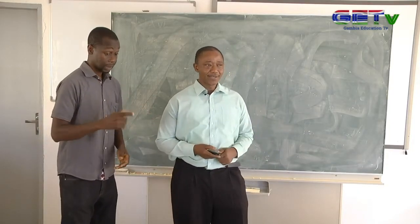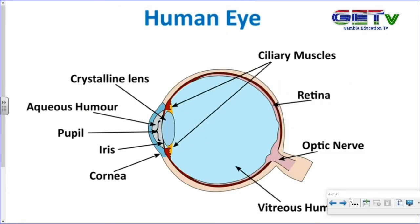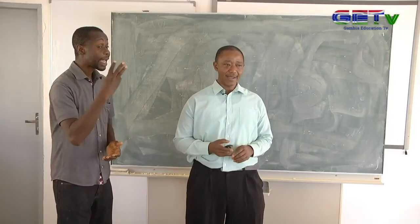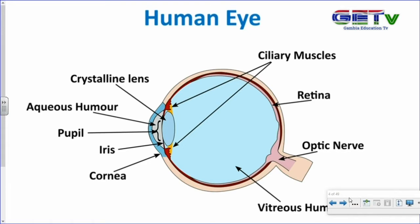Let us recap. In grade 7, we looked at the sense organs — the human eye. I hope this picture looks familiar. You are required to be able to name the different parts and state their functions. Looking at the human eye, it has three layers that cover the entire eye. You can see the retina there — that is the innermost layer. Next to it, going outside, you have the choroid, and finally you have the sclera, the white part that covers the entire eye.